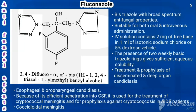Both substituents are the same, so it is bis-. The azole is 1,2,4-triazole, giving 1H-1,2,4-triazol-1-yl-methyl. The chemical name of fluconazole is 2,4-difluoro-alpha,alpha-bis(1H-1,2,4-triazol-1-yl-methyl)benzyl alcohol.